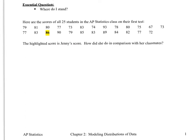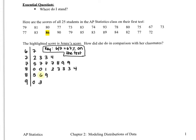Here we have a set of data: 25 students in the AP Statistics class got their grades on their first test. Jenny's score is highlighted in yellow — she got an 86. What we're interested in is how she did in comparison with her classmates. We're going to organize these numbers into a stem plot. Here's our stem and leaf plot, including our key, and we've highlighted Jenny's score of 86 again.